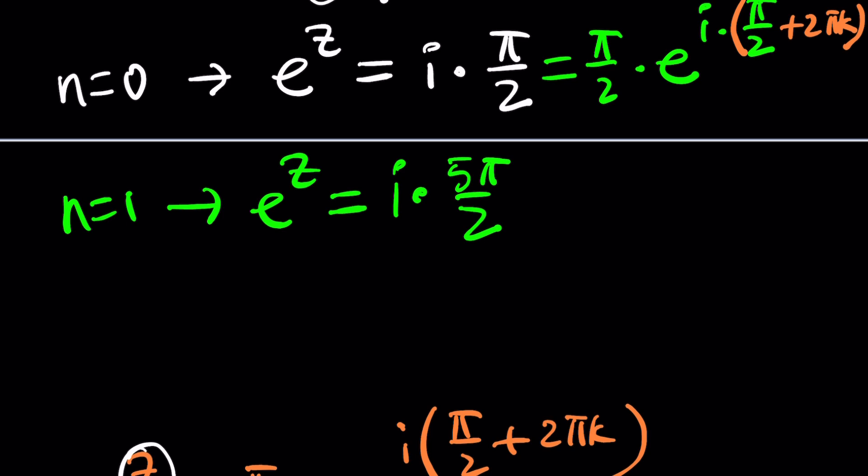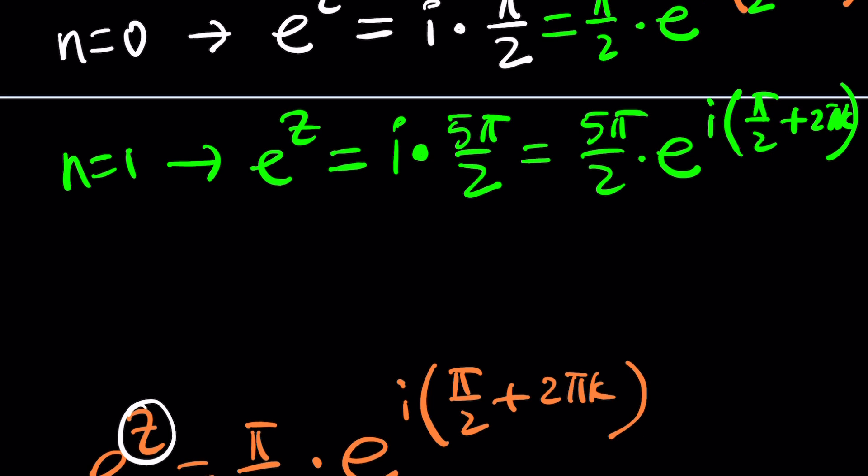So we're going to natural log both sides, right? Well, before we do that, maybe we should consider writing this in polar form, 5π over 2 times e to the power iπ over 2. Again, I can add 2πk if you want. But now we have the following. And when we natural log both sides, you know what the difference is going to be. Instead of getting ln(π/2), you're going to get ln(5π/2). And guess what? The imaginary part is going to be unchanged.